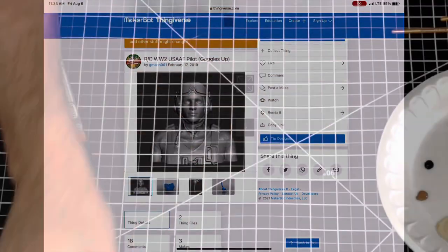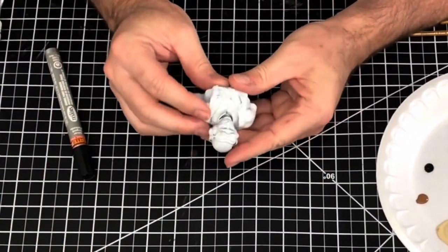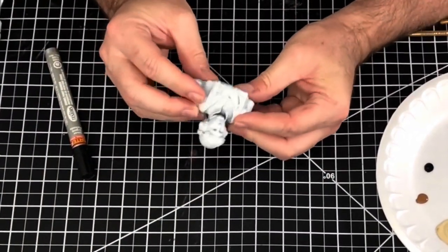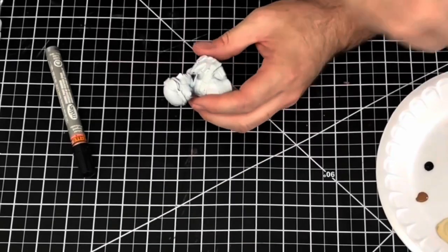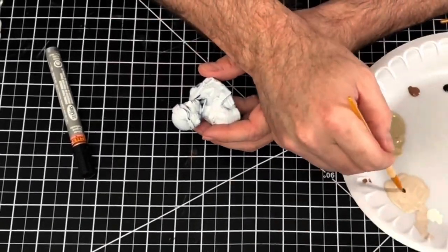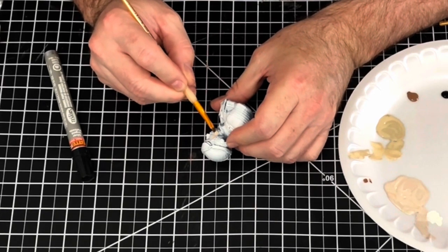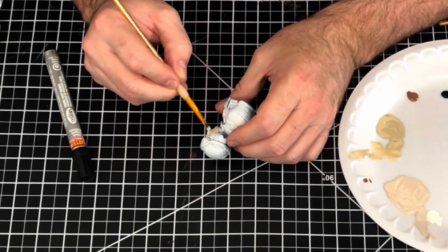There were build lines and of course I had to remove all the supports. Unfortunately I lost the footage of that, so this is the pilot after I smoothed him out in acetone, removed all the supports, and I used a white primer just to set up for my painting.